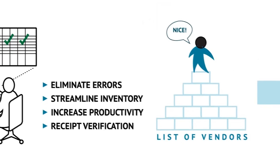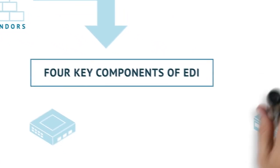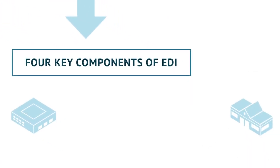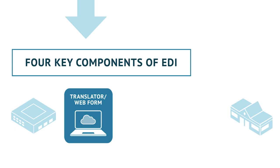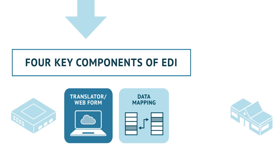A fully integrated EDI solution needs four components. On the left is the supplier; on the right is the customer, a big-box retailer. First, the supplier needs an EDI translator to receive incoming documents from the customer and translate those documents from the EDI standard into a human-readable format. The second component is data mapping, provided between the EDI translator and the supplier's accounting software or ERP system. This ensures that transferred EDI data appears correctly on all associated electronic documents, such as sales orders and invoices, and is mapped properly to the customer's data schemas.